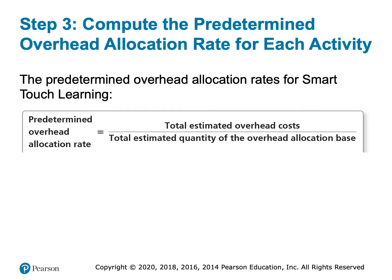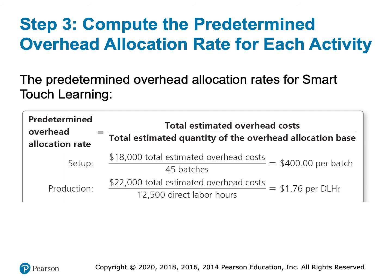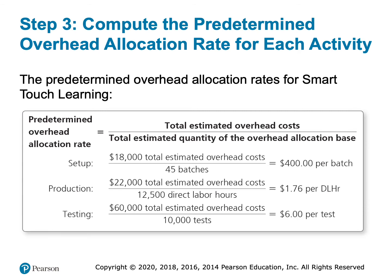For Smart Touch Learning, our formula is the total estimated overhead cost divided by the total estimated allocation base — specifically the total estimated overhead cost for that activity divided by the total estimated quantity of the allocation base for that activity. For setup, it's $18,000 divided by 45 batches, which gives $400 per batch. For production, it's $22,000 divided by 12,500 direct labor hours, or $1.76 per direct labor hour. And for testing, it's $60,000 divided by 10,000 tests, giving us $6 per test.